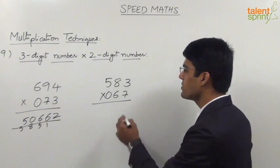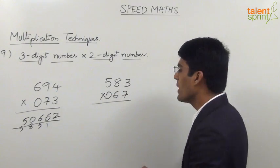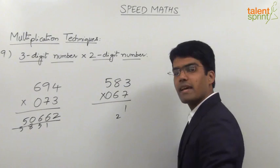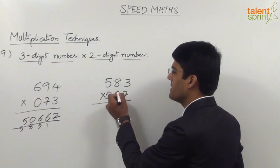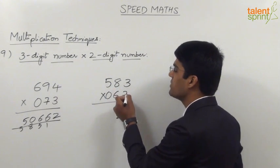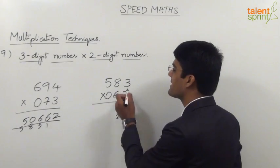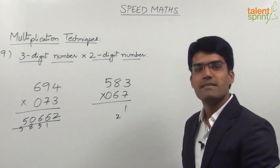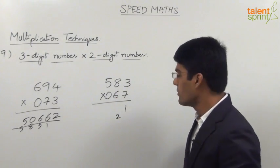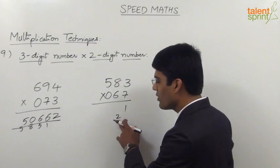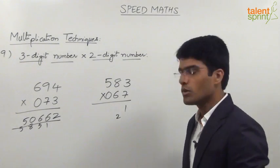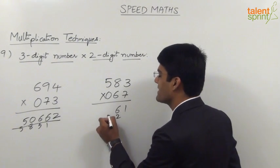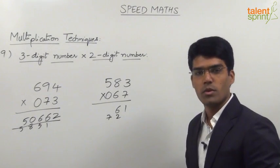The first step: 3 × 7 = 21, so 1 is in the answer and 2 is carried forward. The second step is cross multiplication: 8 × 7 = 56 and 6 × 3 = 18. 56 + 18 = 74, plus the carry of 2 gives 76. So we take 6 in the answer and 7 is carried forward.